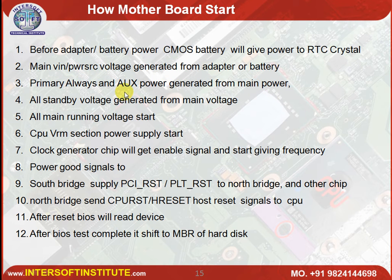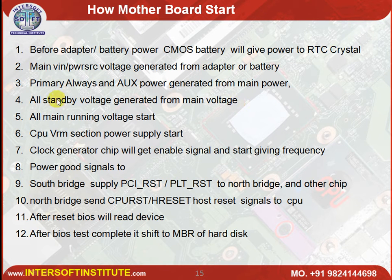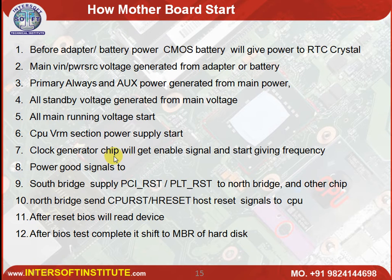Primary always-on and auxiliary power are generated from the main power. This is the main power, and from it the always-on auxiliary power or S5 power starts running. After that, when we press the power button, standby voltage is generated from the main voltage. After standby voltage, the remaining running voltages come up. After running voltage, the CPU VRM secondary voltage is generated, then the VRM section starts. After VRM, the clock generator gets enable signals from the VRM ICs. Once all powers are okay, the power-good signal goes to the south bridge.